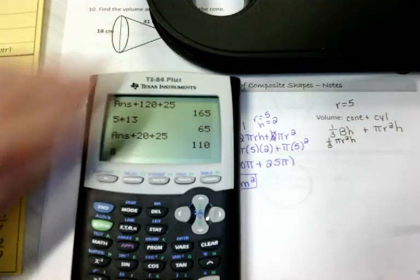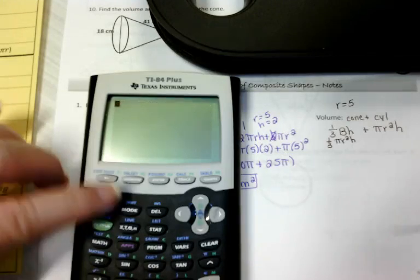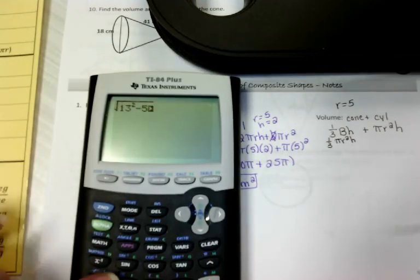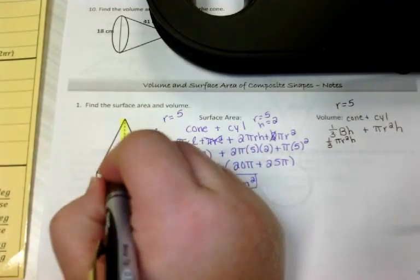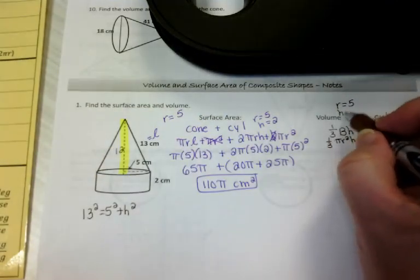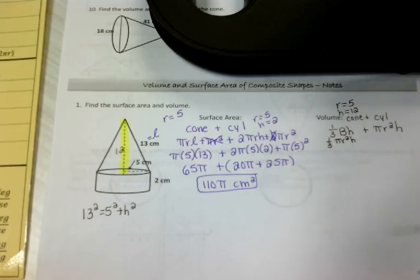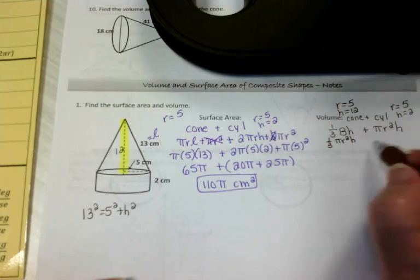So grab your calculator. Some of you may already recognize the Pythagorean triple. And the height is 12. So for my cone, the radius was 5, the height was 12. For my cylinder, we have the same radius of 5 and a height of 2.